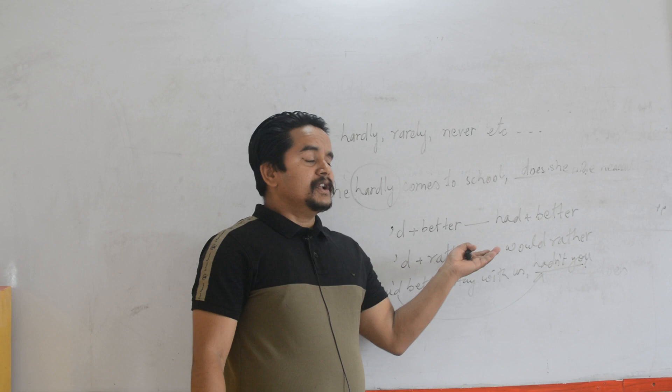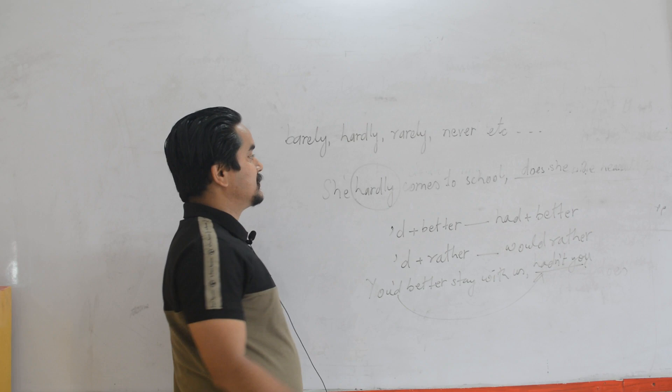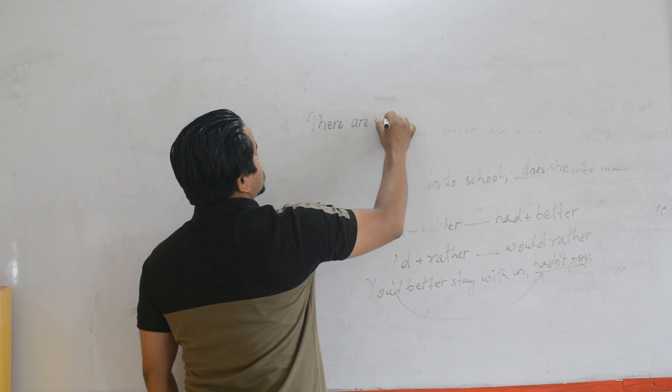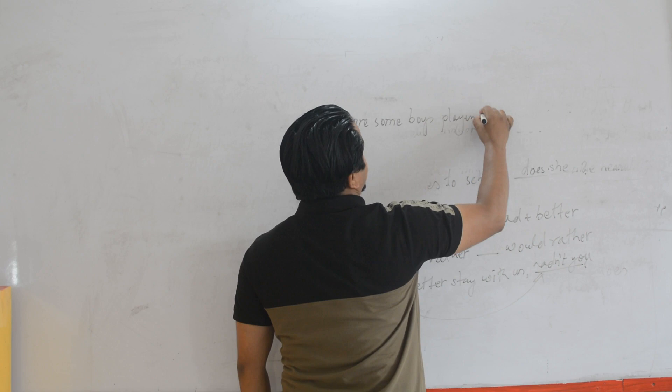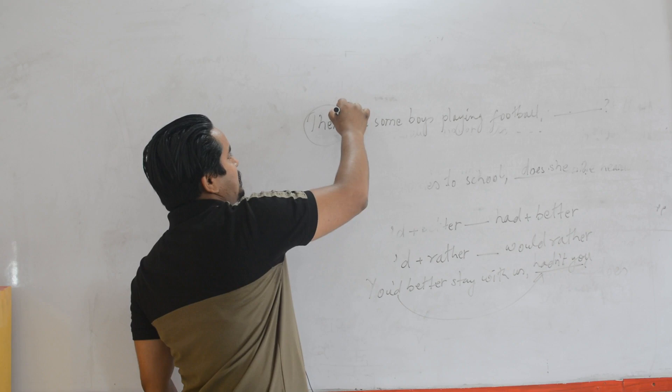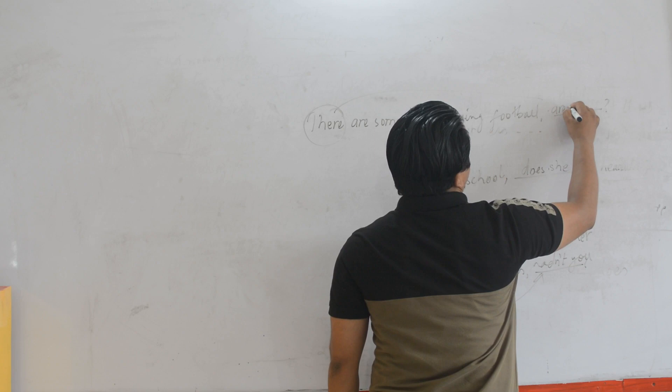Now, another important thing is you have to be a little bit careful about the subject of the question tag. For example, if a sentence begins with 'there' as the subject — like 'There are some boys playing outside' — since the sentence begins with 'there', the same 'there' we use in the question tag. So: 'There are some boys playing outside, aren't there?'